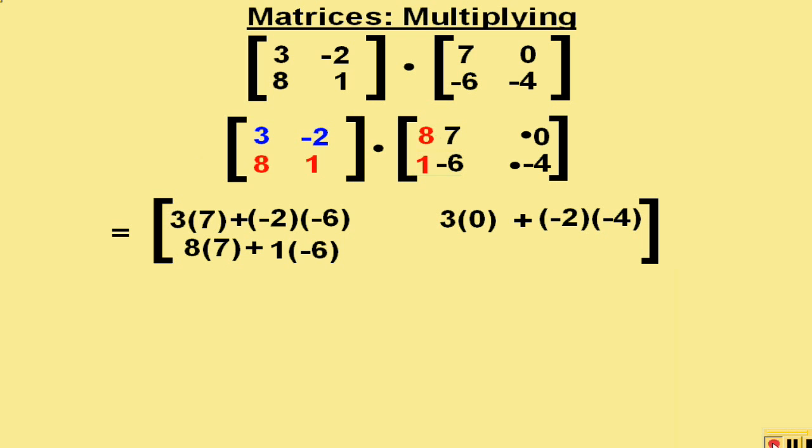And we again move the 8 and the 1 to the 0 and negative 4. 8 times 0 plus 1 times negative 4. This then completes the fourth number of our answer matrix. We now simplify each spot.